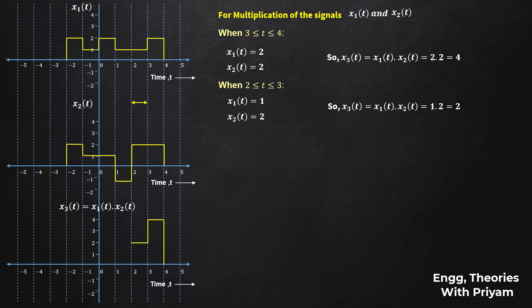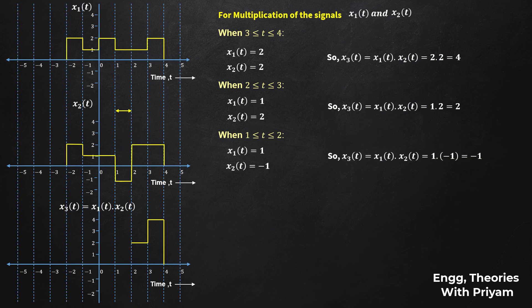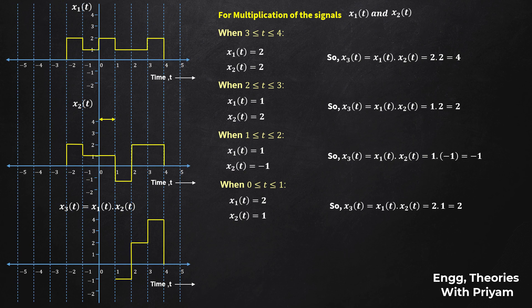When t is in [1, 2], x1(t) = 1 and x2(t) = -1, so x3(t) = 1 × (-1) = -1. When t is in [0, 1], x1(t) = 2 and x2(t) = 1, so x3(t) = 2 × 1 = 2.